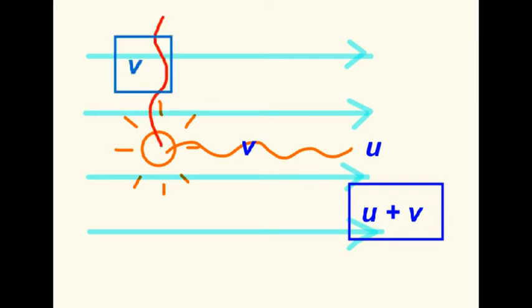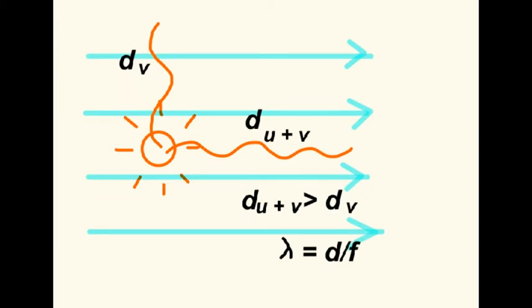But for a light ray travelling perpendicular to the ether, it's just V. The distances travelled in some time will be denoted by D U plus V and D V. It seems obvious that D U plus V must be greater than D V.